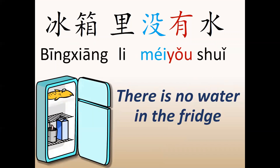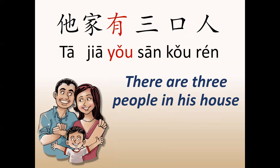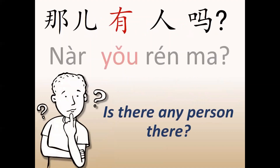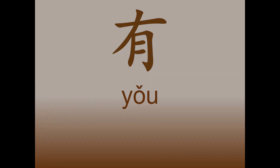There is no water in the fridge — 冰箱里没有水. There are three people in his house. Is there any person there? Remember the verb yǒu with the meaning of 'there is, there are.'